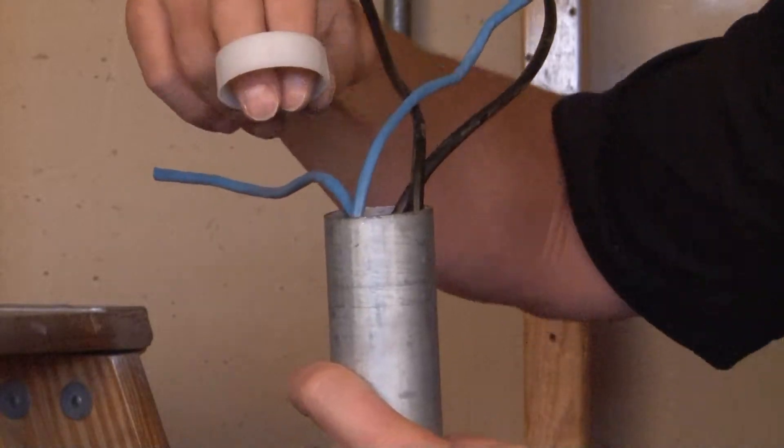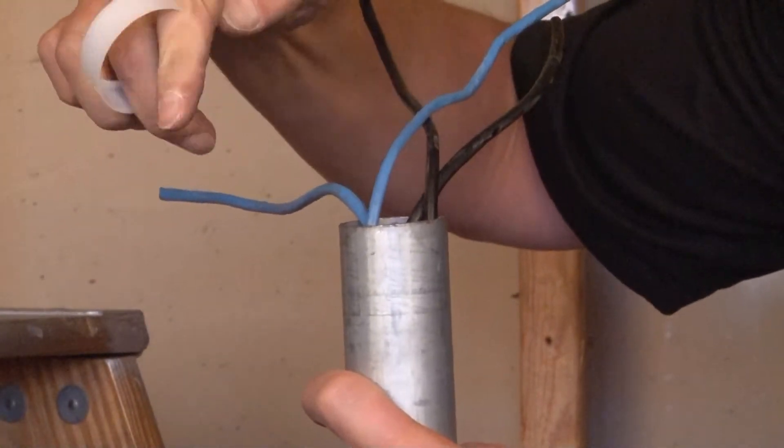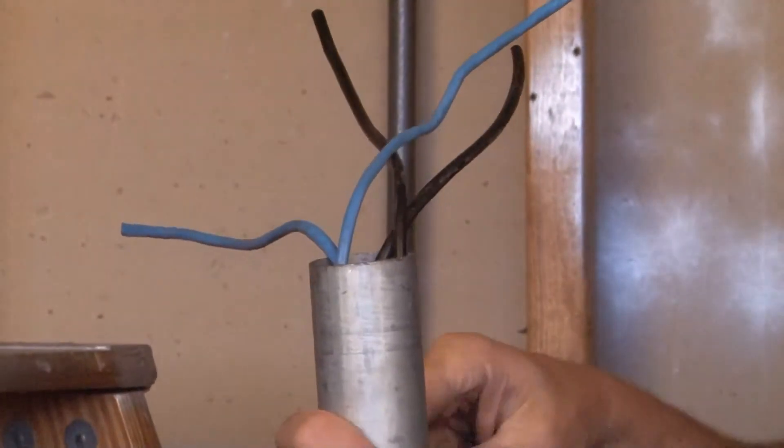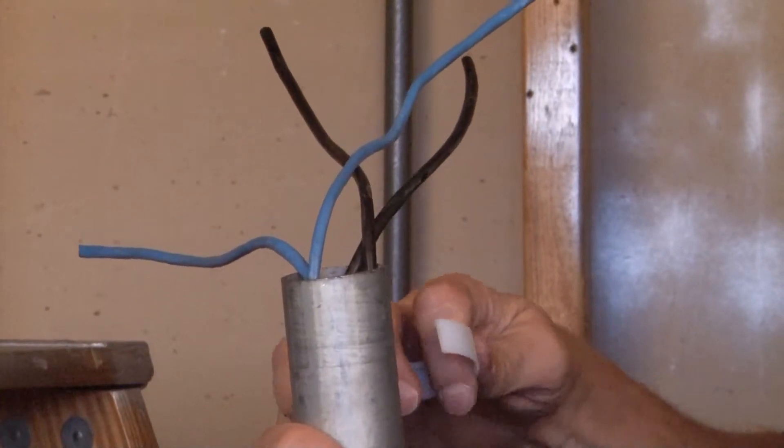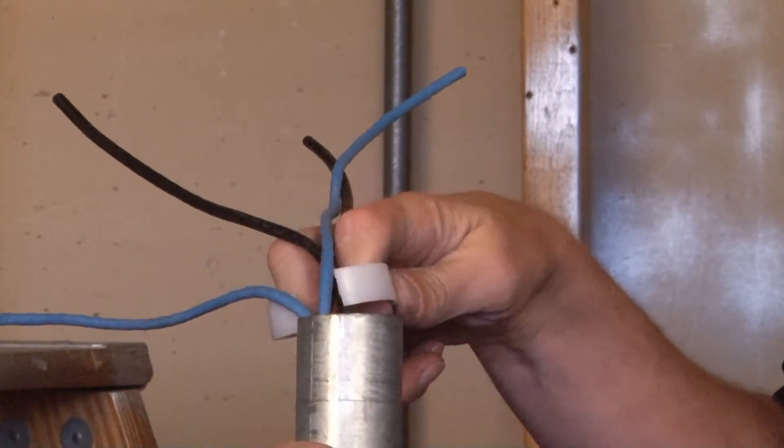To solve this problem, Garvin Industries makes a split insulating bushing that you simply open up and wrap around the wires that are already in the conduit, like so.